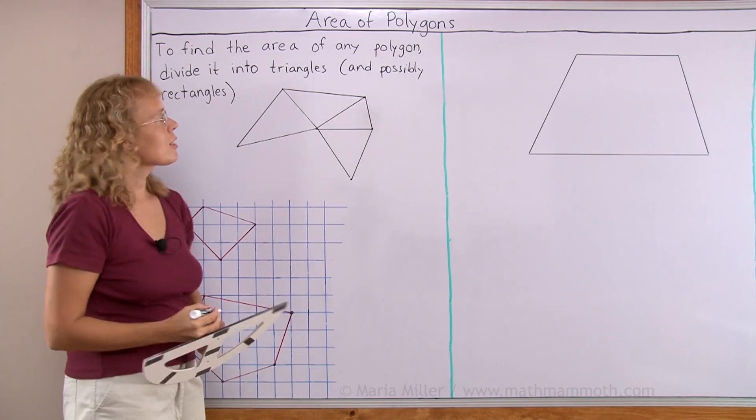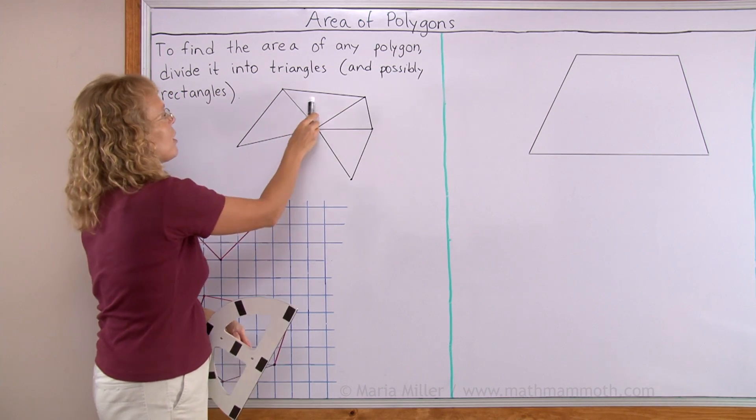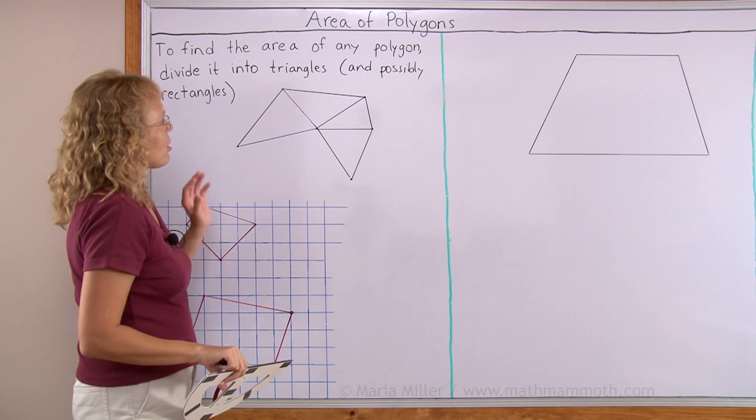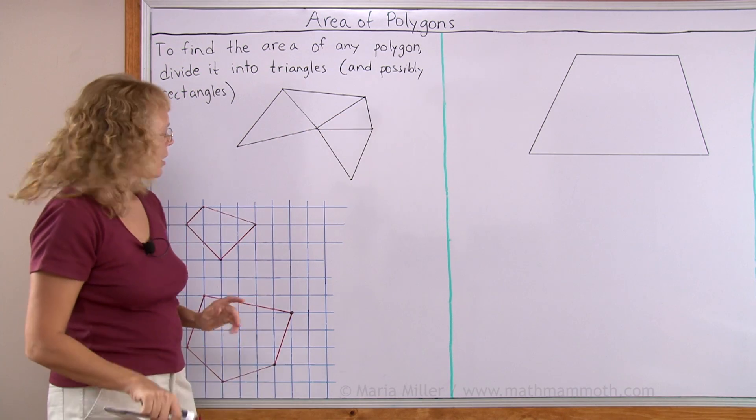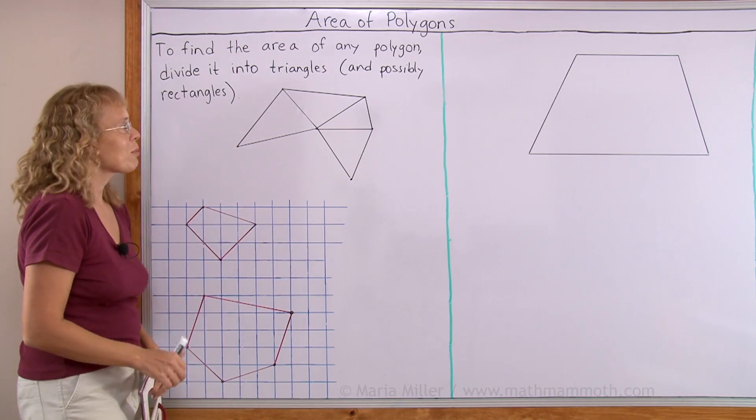Now it's divided into triangles and if we were to find the area of the polygon we just find the area of each triangle and then add all those up. Now we're not gonna find the area of this polygon though. Let's go on and find first the areas of these and then that one.